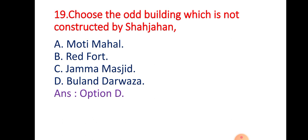Question 19: Choose the odd building which was not constructed by Shahjahan. Shahjahan had a great passion for buildings and architecture. Option A: Moti Mahal; Option B: Red Fort; Option C: Jama Masjid; Option D: Buland Darwaza. The right answer is Option D — Buland Darwaza was not constructed by Shahjahan; it was constructed by Akbar as a memory of his victory over Gujarat.